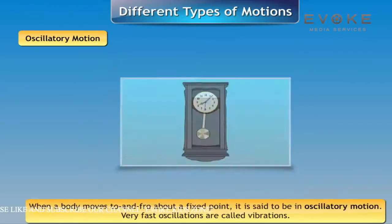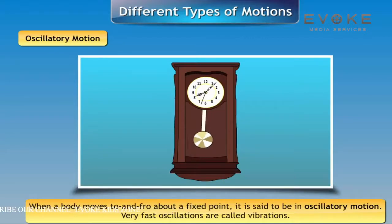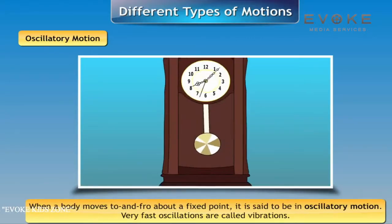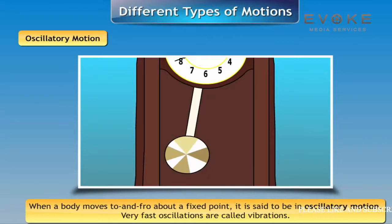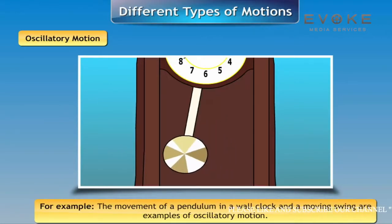Oscillatory motion: When a body moves to and fro about a fixed point, it is said to be in oscillatory motion. Very fast oscillations are called vibrations. For example, the movement of a pendulum in a wall clock and a moving swing.